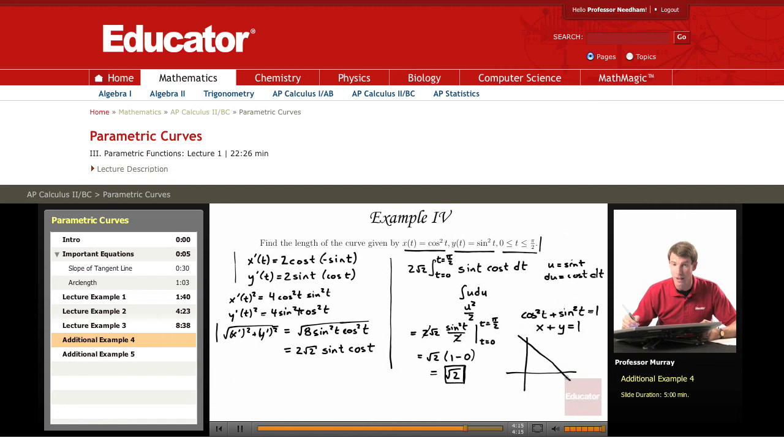So there's that line and if you plug in t = 0 then x is 1 and y is 0. So there's t = 0 at the point (1, 0).